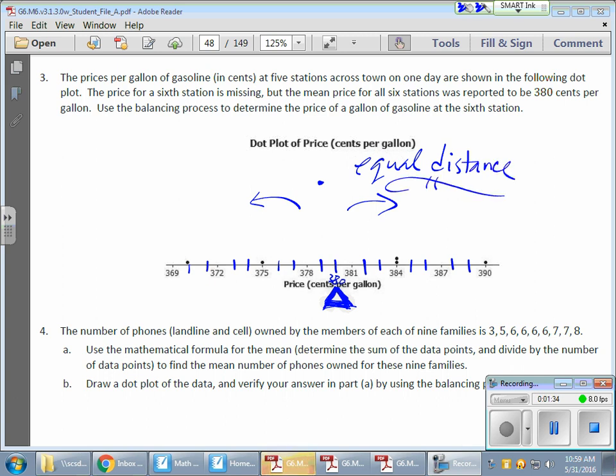Now, it looks like I have two 384s. Now, from my balance spot right here, 384 is 4 away. But I have two of them there, all right?